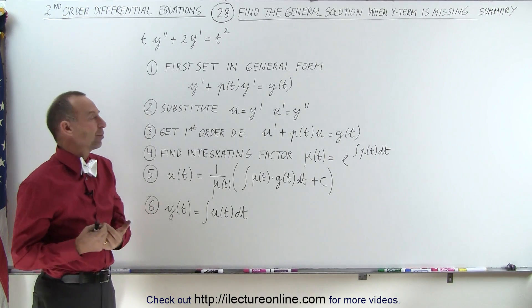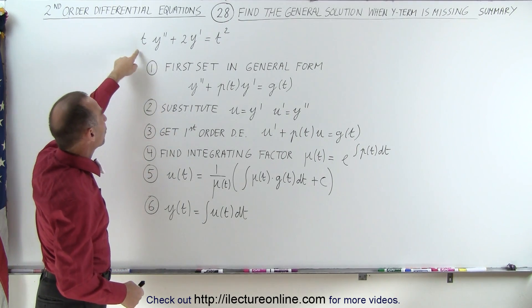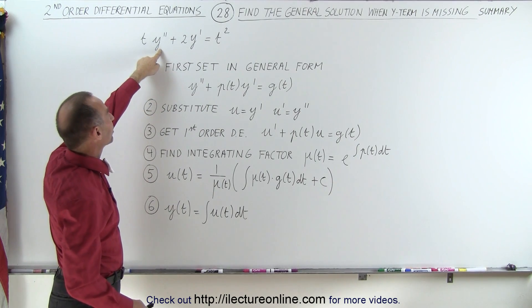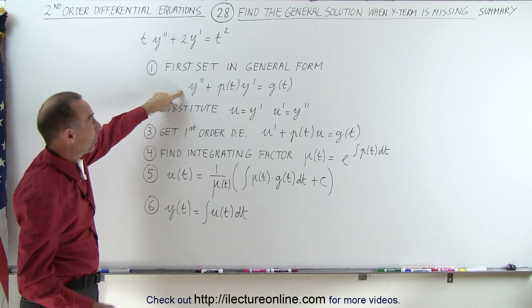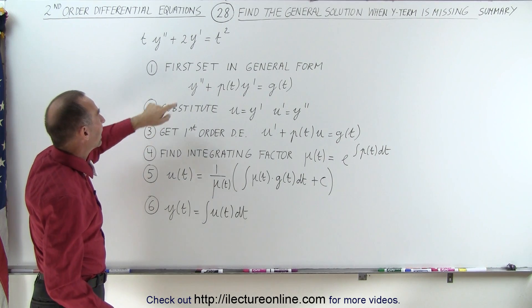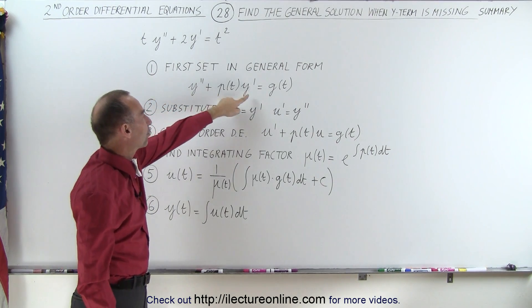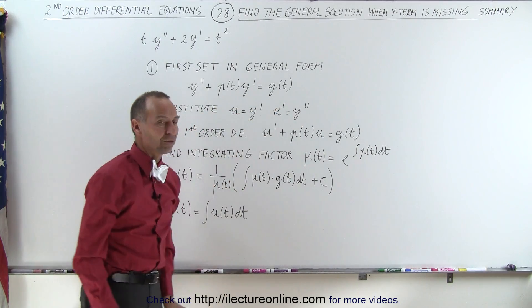We follow the following six steps. First, we set the equation into the general form, where we get rid of the coefficient in front of the y double prime, or the second derivative of y. We then end up with y double prime plus some function of t times y prime equals some other function of t.